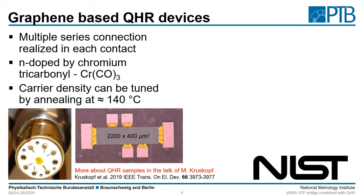The first graphene based quantum hall device I want to show you is kindly provided by NIST. The design is made in a multiple series connection in each contact. So it is not only an external triple series connection but all these contacts are made of different branches to have the multiple series connection already realized on the chip. The devices are doped by chromium tricarbonyl, and this method allows us to change the carrier density even after manufacturing. This is done by annealing at a temperature of about 140 degrees Celsius, and if you want to change the carrier density in the other direction you have to expose them to air and wait a while, then reheat them to the desired carrier density.